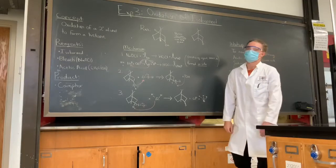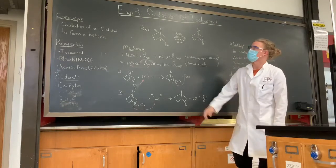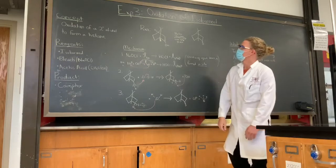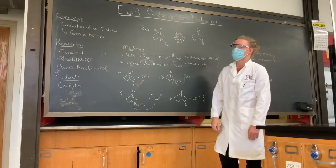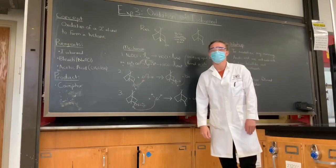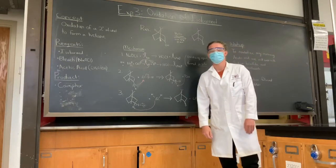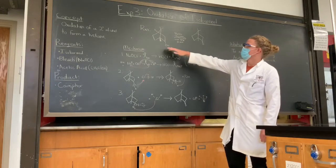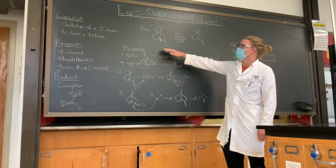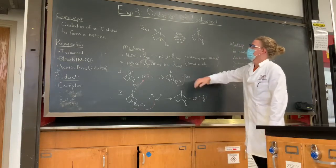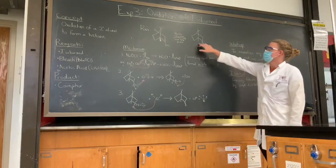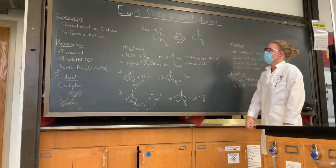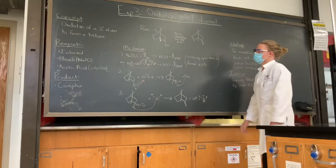In today's video we're going to be going over the oxidation of isoborneol. This reaction is an oxidation, the inverse of the pure reduction reactions we did last week. This reaction involves taking a secondary alcohol, adding partial bleach and glacial acetic acid, and then you'll get a ketone.